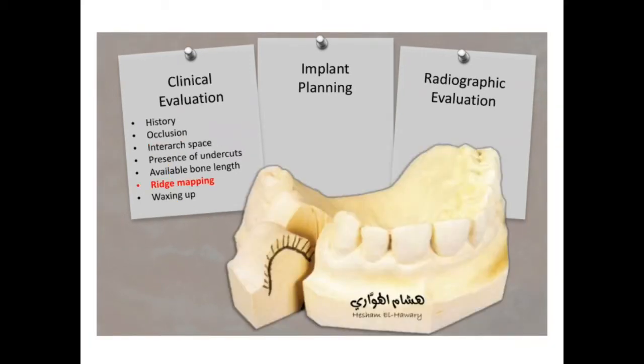We know that bone is the most important thing for implants, but patients have a covering — the periosteum and then the mucosa, which we call the mucoperiosteum. Sometimes the mucoperiosteum is very thick. Ridge mapping is the procedure done to measure that particular tissue thickness. There are certain techniques called ridge mapping which can be done clinically, without needing CBCT sections.